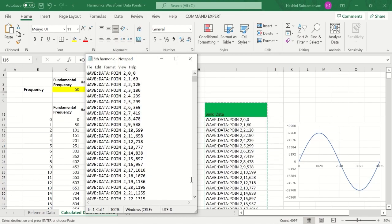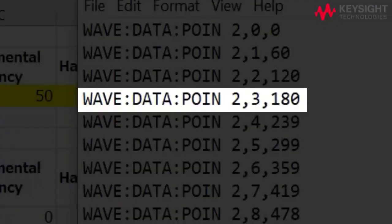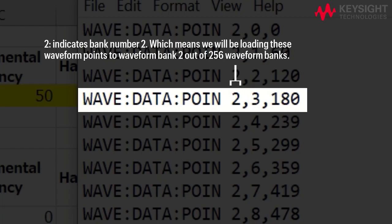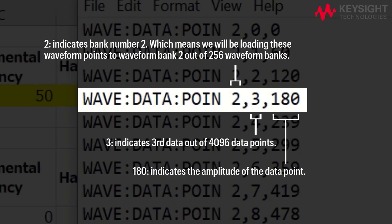You may have noticed that this is a SCPI command. Let's take a data point and analyze it. The number 2 indicates bank number 2, which means we will be loading this waveform to waveform bank 2 out of 256 waveform banks. The number 3 indicates the third data point out of the 4096 data points, and 180 indicates the amplitude of the data point.